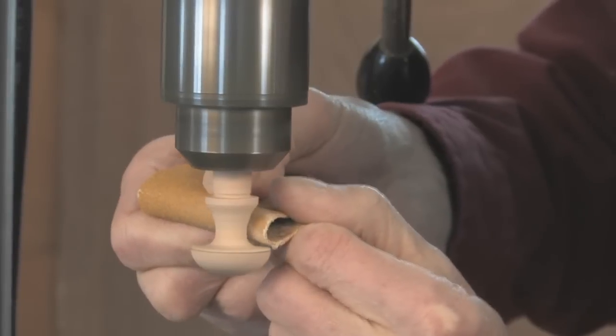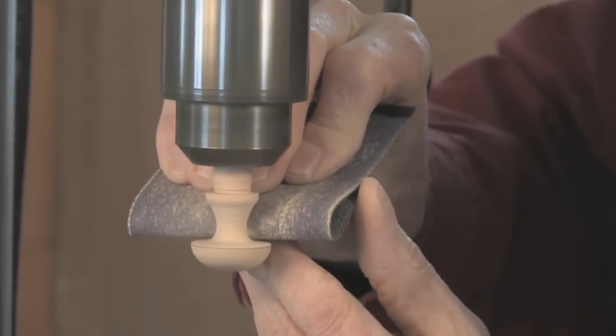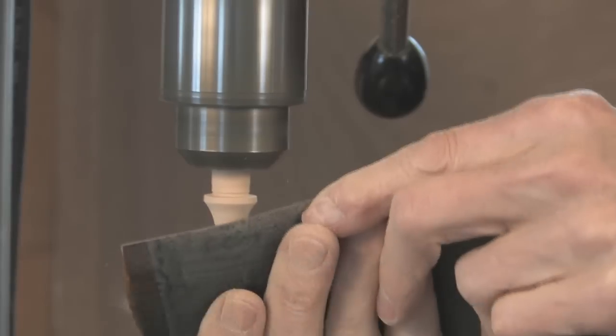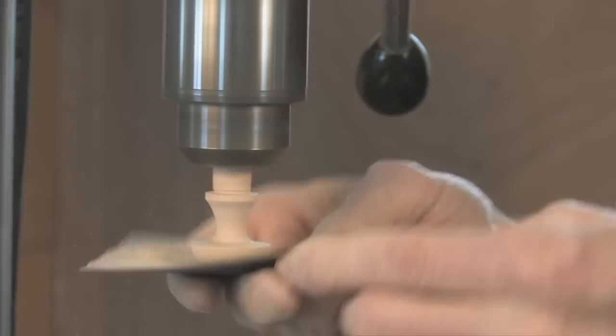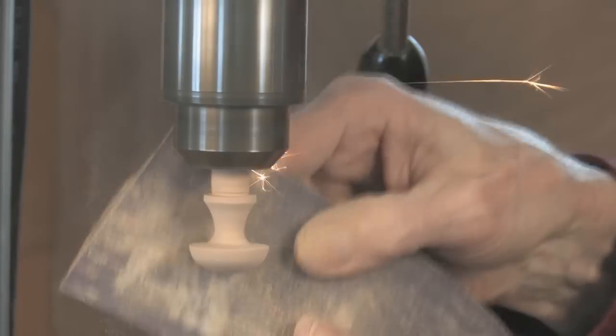After all the filing and rasping is done, I'll go to some coarse sandpaper. Usually, I keep some used sanding belts around. I'll just tear a little piece off. You can start with an 80 grit, and that will smooth things out but still leave a lot of scratches.